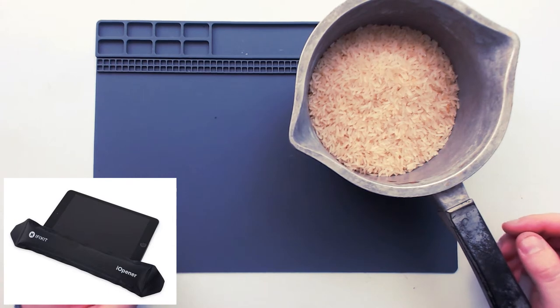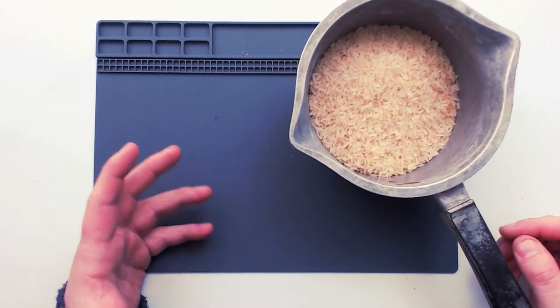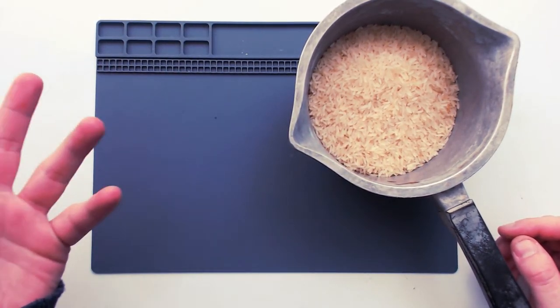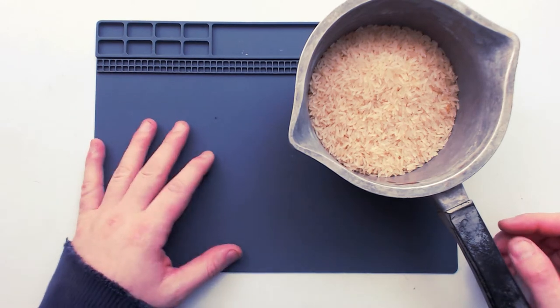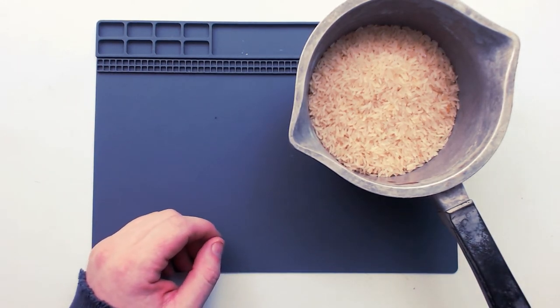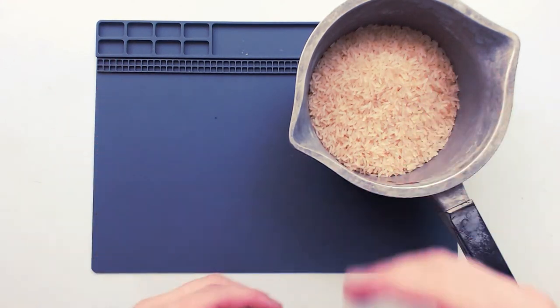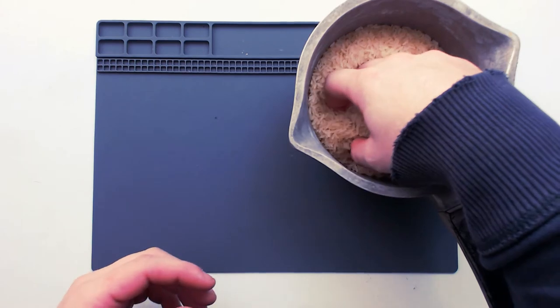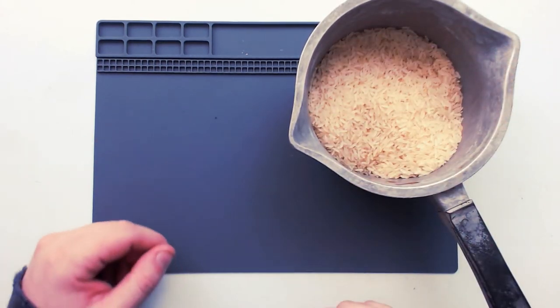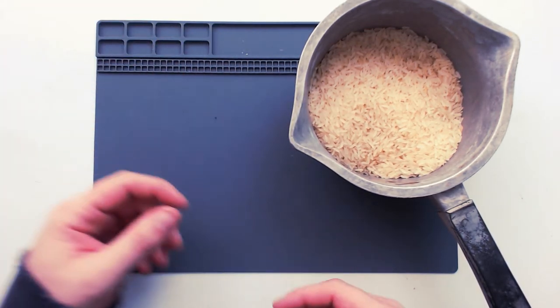Basically it's a heat pad designed to loosen up the glue on a phone or on a tablet, anything where the screen's glued down, specifically like iPads and stuff like that where you need to get the hairdryer out normally. What you're meant to do is put this pad in the microwave and then it'll hold its heat for up to 10 minutes or something like that. And yeah, away you go, you lay it down on the thing you need, give it a couple of minutes and then pry it up.